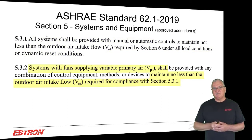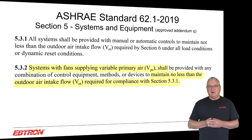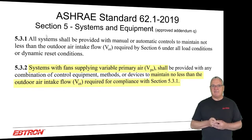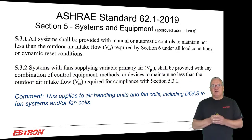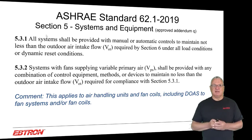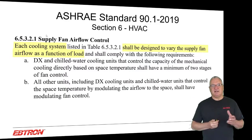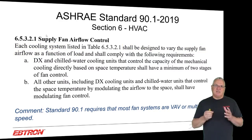Systems with fans supplying variable primary air — such as variable-speed fan coils — shall maintain no less than the outdoor air intake flow required for compliance with section 5.3.1. The scope of where you need active and dynamic control has become broader than it was several years ago. The reason for that is the requirement under Standard 90.1 that each cooling system shall be designed to vary the supply fan airflow as a function of load — so it's not just VAV anymore.